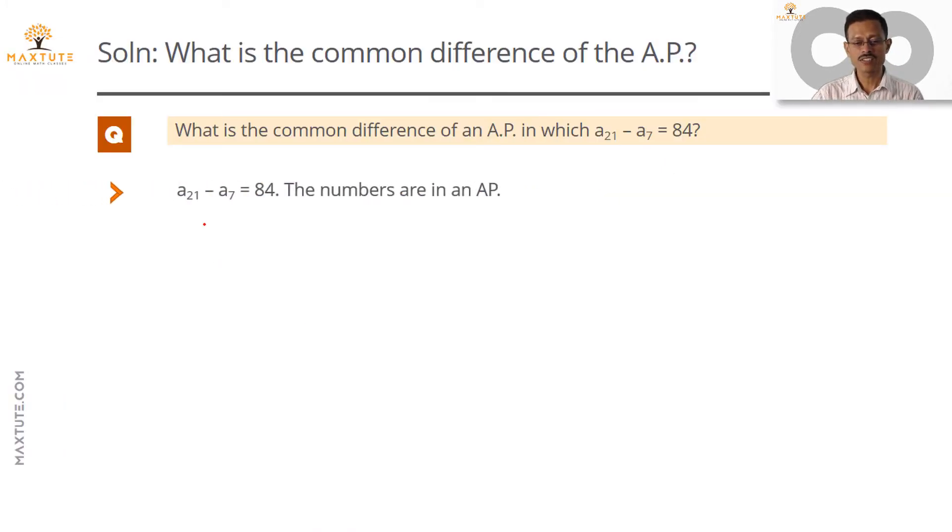Quickly jot down the key data, which is A21 minus A7 is equal to 84, and these numbers are in an AP.